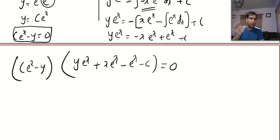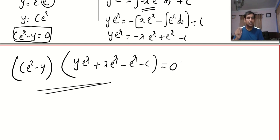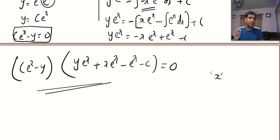The general solution is: c e to the power x minus y, times y e to the power x plus x e to the power x minus e to the power x minus c, equals zero. Note that some people might divide throughout by e to the power x, so their solution will look different, but it is the same. I will be back with the next video very soon, where we will learn something very important and a little bit tougher — solvable for x and solvable for y. Till then, bye.